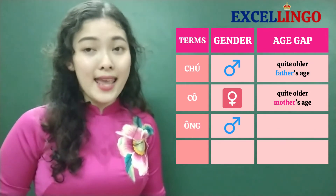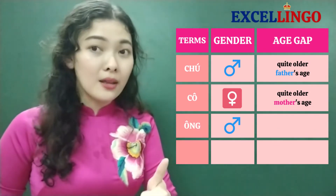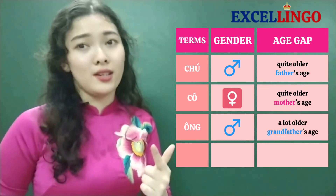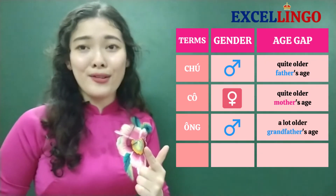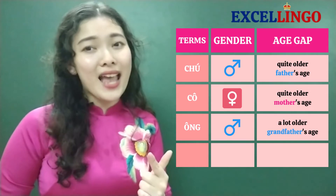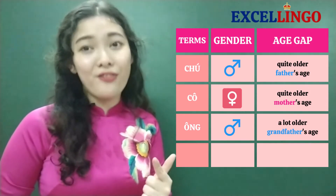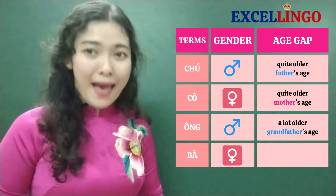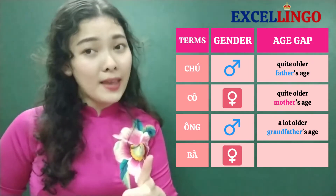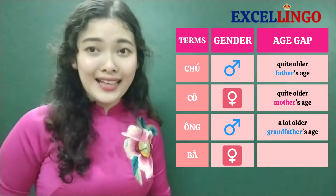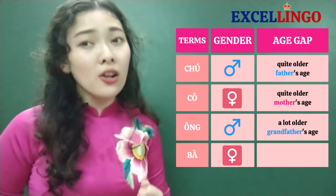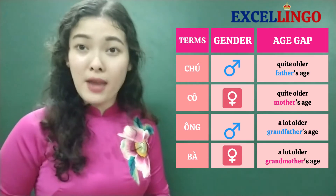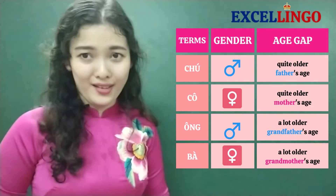We call someone 'bà' when it's a female and she's a lot older than us — she's about the same age as our grandmother.